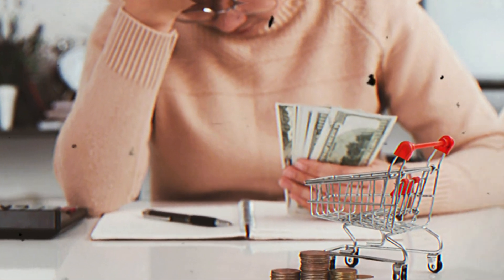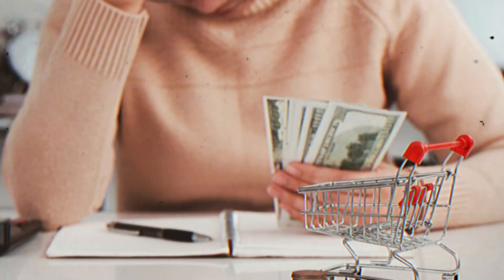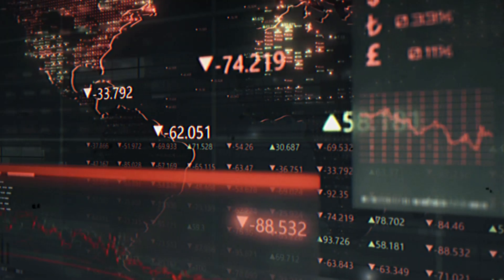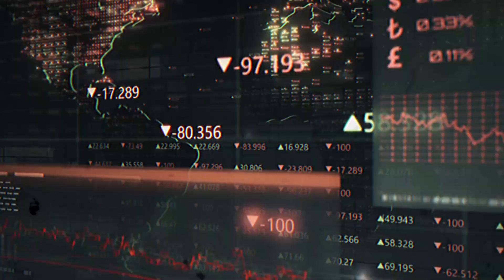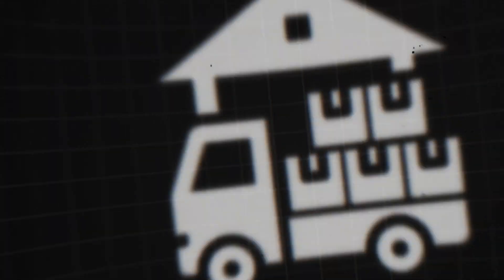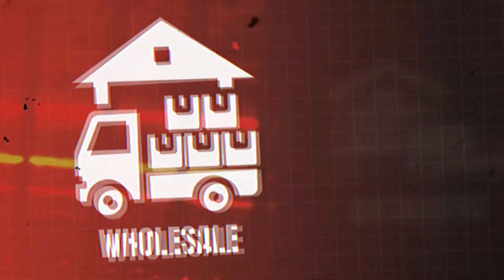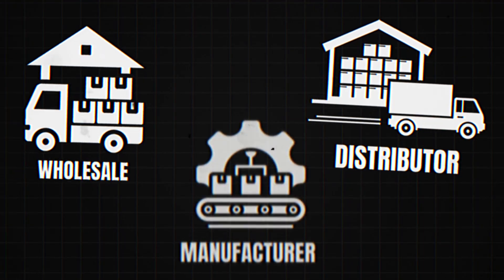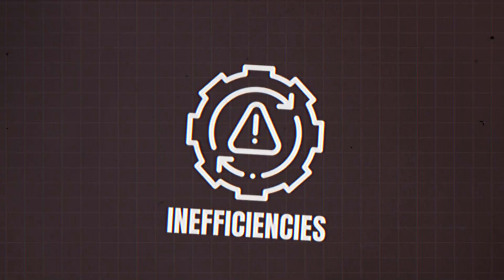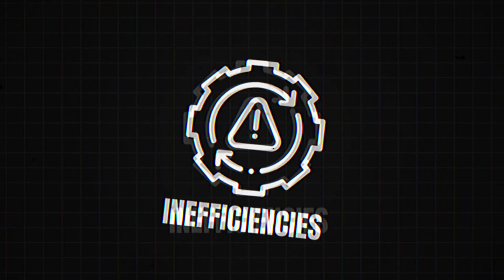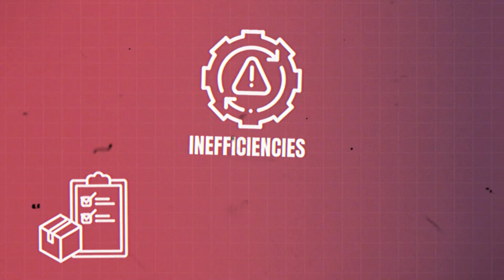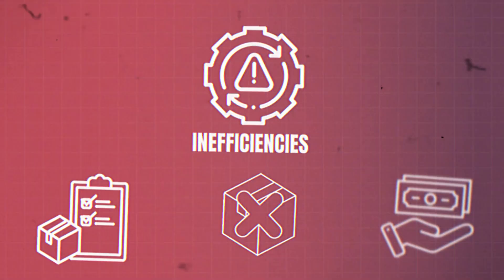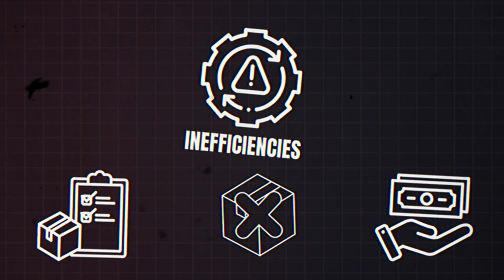In this video, we describe how small variations in consumer demand can lead to larger and more exaggerated fluctuations in demand at the wholesale, distributor, and manufacturer levels. This effect results in inefficiencies like excess inventory, stockouts, and increased costs throughout the supply chain.